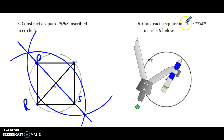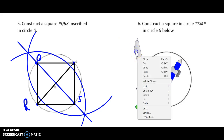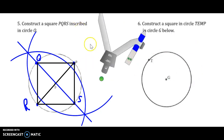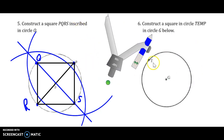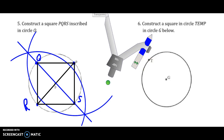We'll do this one more time — construct square TEMP in circle G below. The first step is to draw a diameter, and again we want T to be one of the endpoints of that diameter.